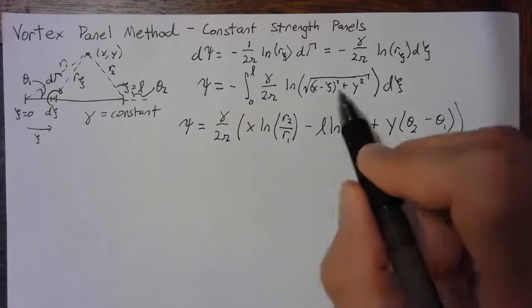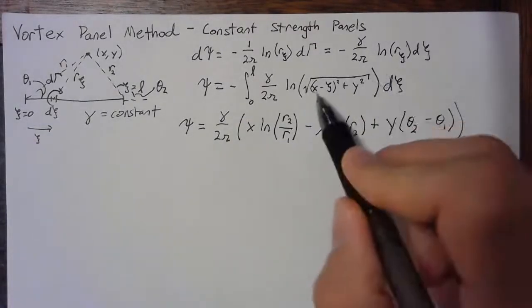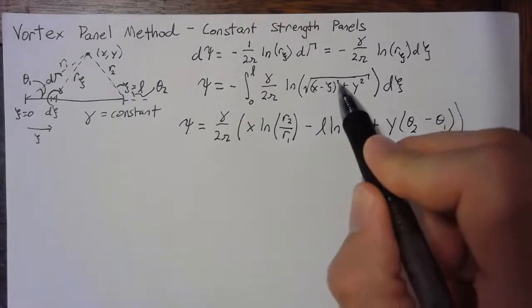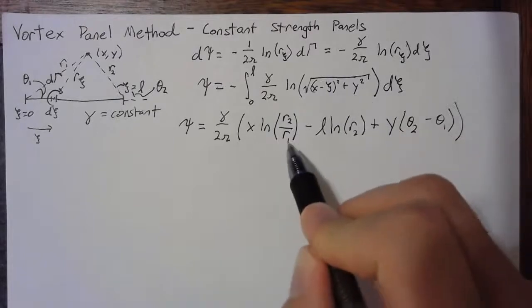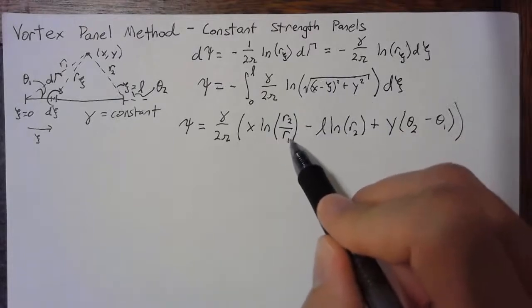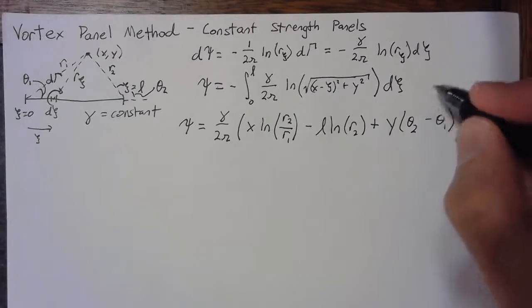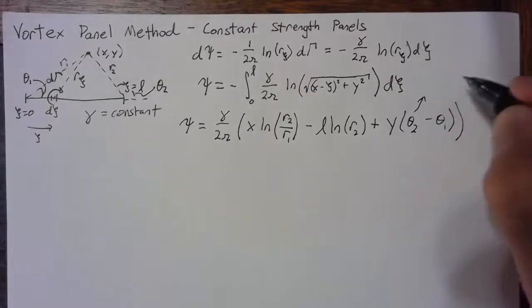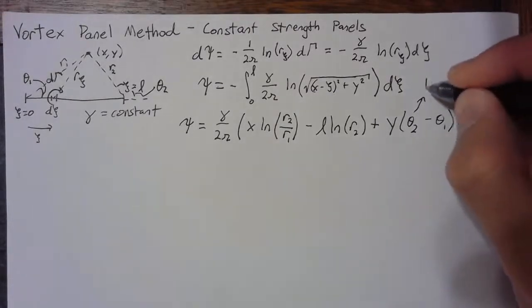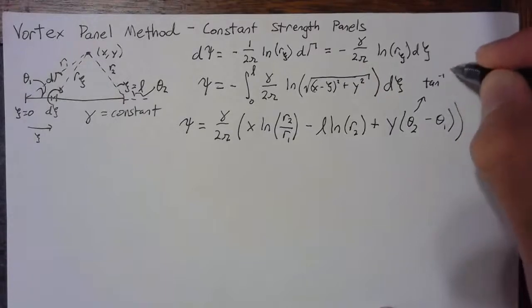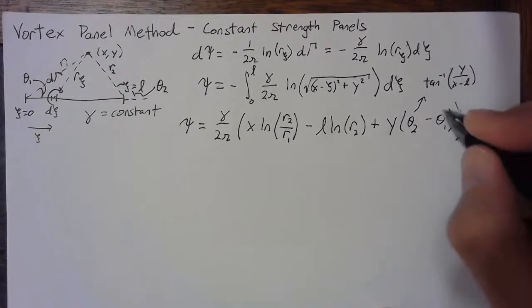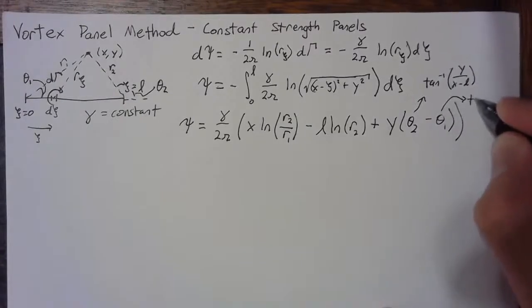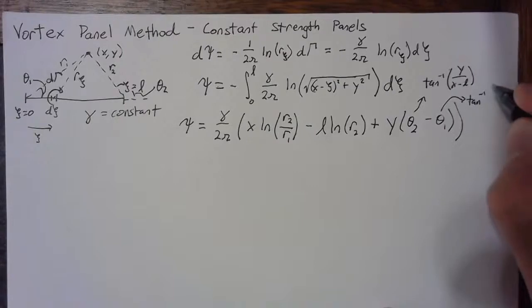r2 is simply the square root of x minus L squared plus y squared. r1 is the square root of x squared plus y squared. Theta2 is going to be the arctangent or the inverse tangent of y over x minus L, and theta1 is going to be the inverse tangent of just y over x.